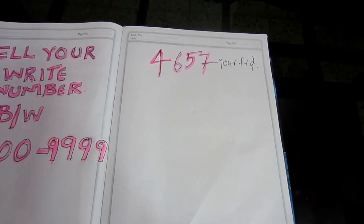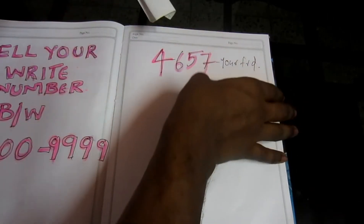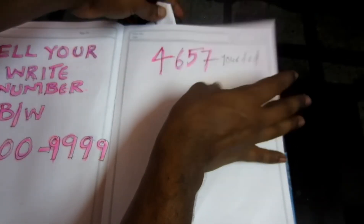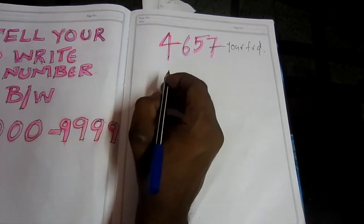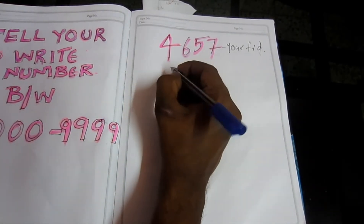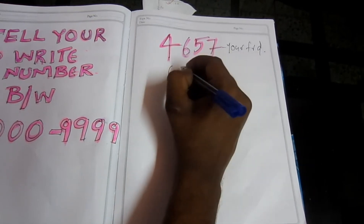Your friend has written their number. I will write a number alongside my friend's number at the same time. On the side of the friend's number, I will write my number. Now we will see the next number. We will see an image.